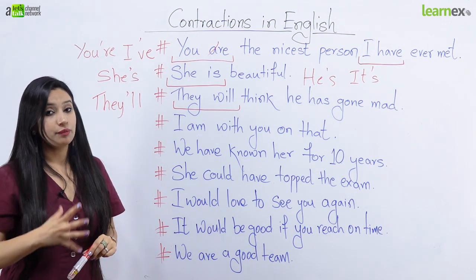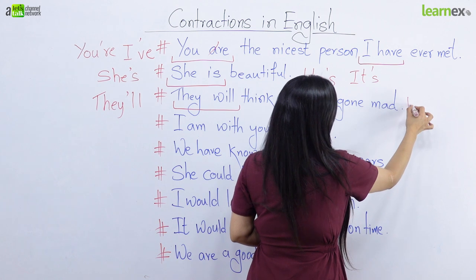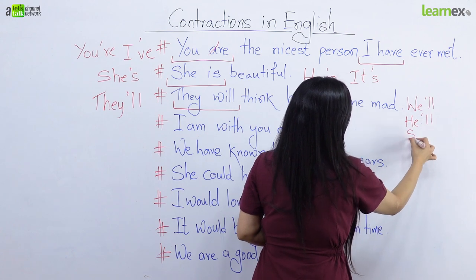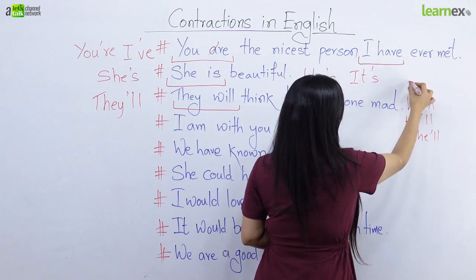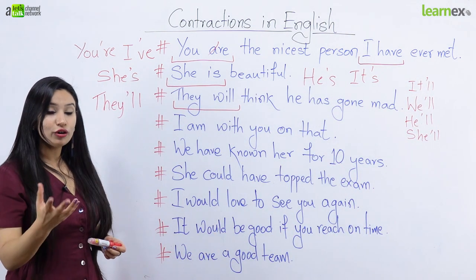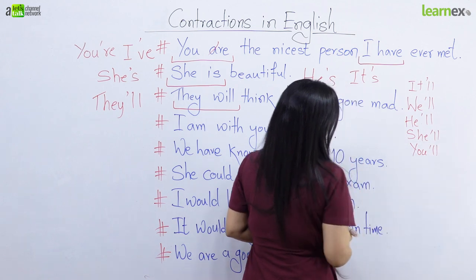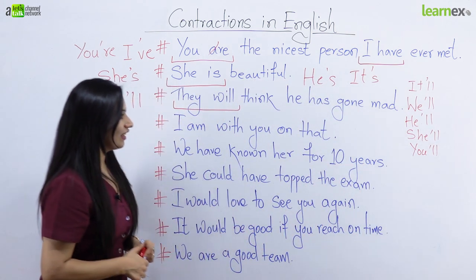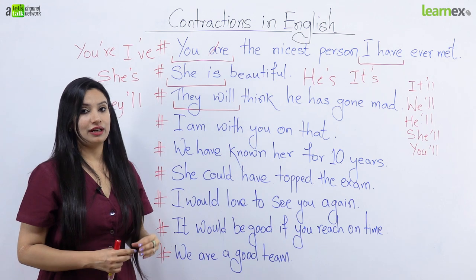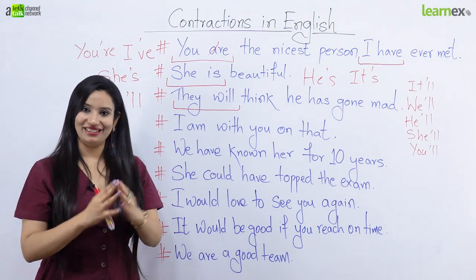Ab they mein bhi hum subject badal ke aur bhi contractions bana sakte hain. He'll, she'll, it'll, you'll, we'll. Toh he, she, it, we, you, aur they ke saath aap W-I-L-L ka use karke banayenge: he'll, she'll, they'll, we'll, it'll. Par yaad rakhiyega jab aap it'll bolenge toh ek chhota sa break aayega.